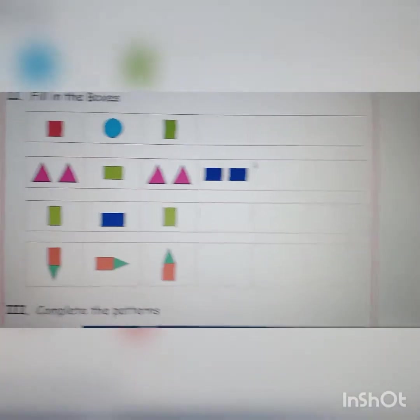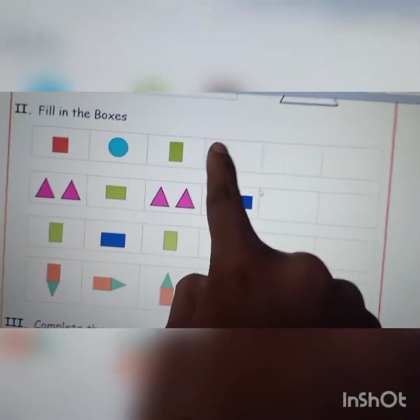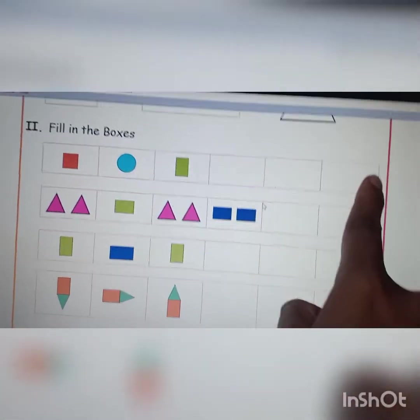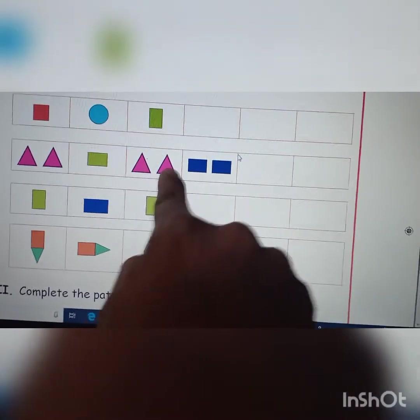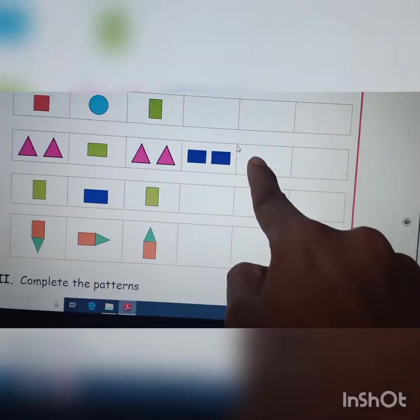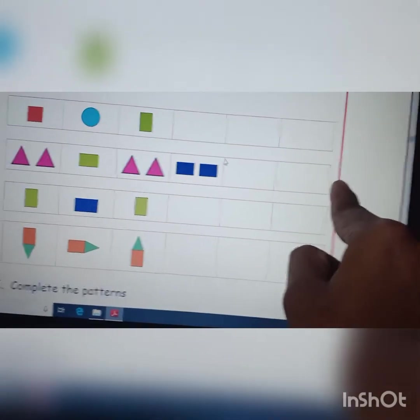Students, what you do is repeat square, circle, rectangle. What you do is draw two triangles and rectangle. Two triangles and two rectangles. Here, two triangles and three rectangles you should draw.